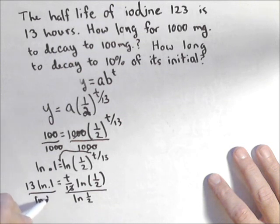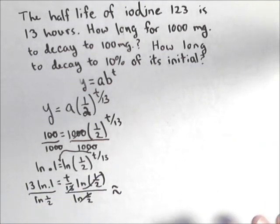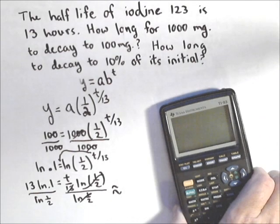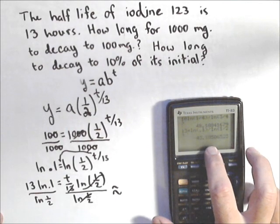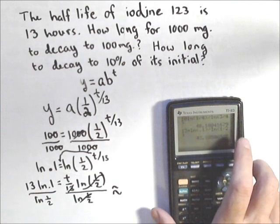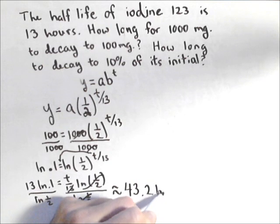So there is how long it's gonna take. Now what would be nice is if we had this as a number, so we will use our calculator to help us out there. And so I've got that it's gonna be 13 times ln of 0.1, close my parentheses, divided by ln of 1 half. And it's gonna take about 43.2 hours.